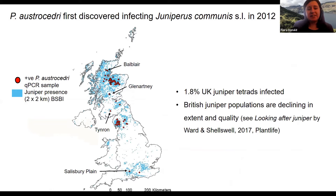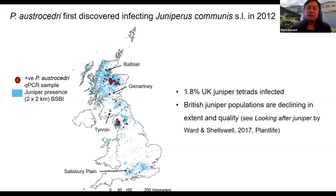Phytophthora austrasidri was first discovered in juniper in the UK in 2012. These are your records — juniper tetrads recorded since 1990 shown in blue and the distribution of austrasidri shown by the red dots. By the time we knew we needed to look for it, unfortunately we found it was distributed throughout England and Scotland. Regarding taxonomy, I reached out to several of you and the consensus was that the characters separating subspecies communis from subspecies nana are quite cryptic, so it was generally recommended to look at communis sensu lato. Lab experiments have shown that subspecies nana can also be infected, so there's no reason to suspect austrasidri has different effects on the different subspecies.